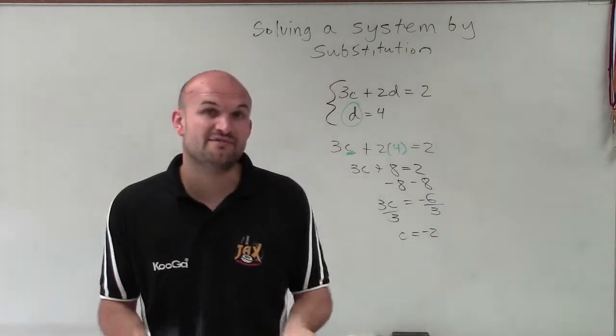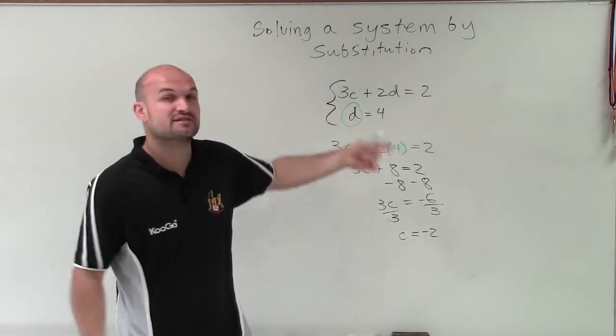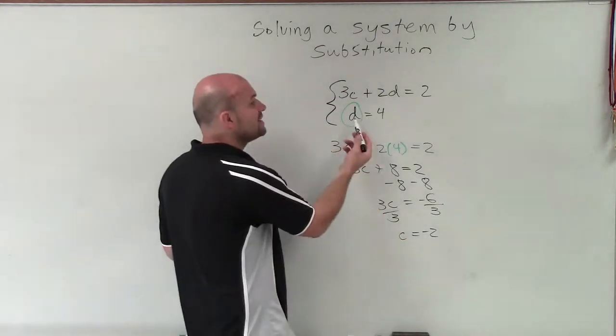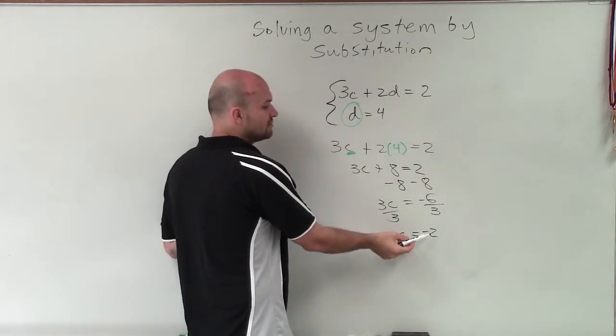Now remember, when solving a system, we need to find the value for both variables. We need to find the value of c and d. What's nice about this problem is the equation is true when d equals 4 and also when c equals negative 2.